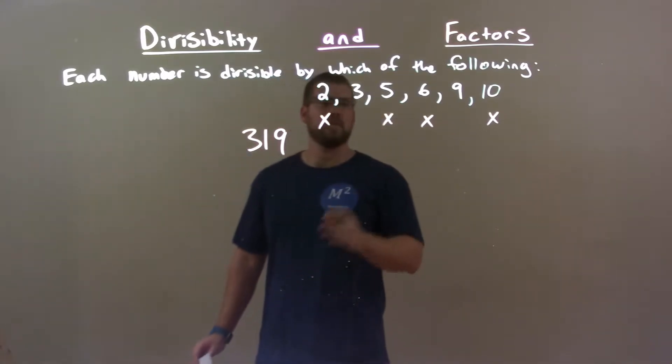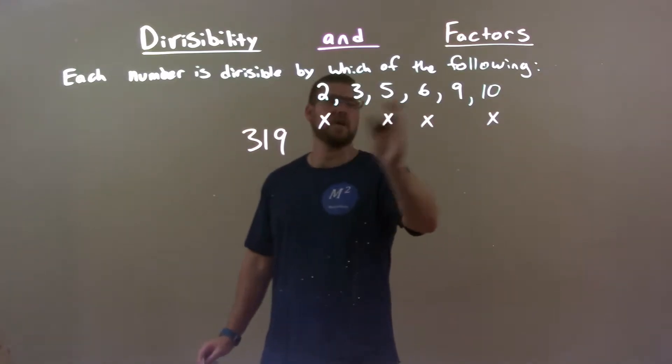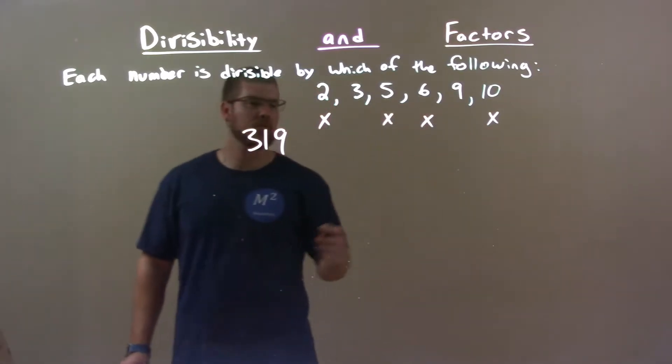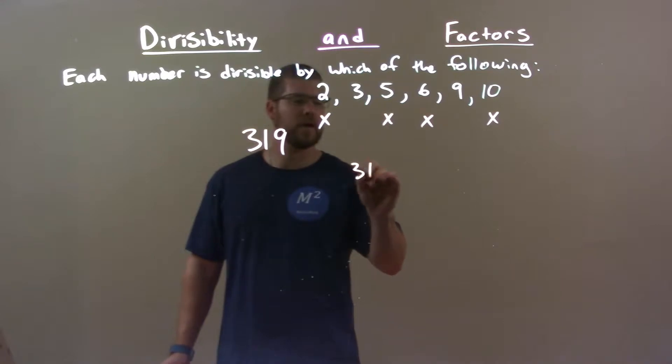So now let's start with, we have most of them checked off, just 3 and 9 now. So, let's do some long division to see. Does 3 work into 319?